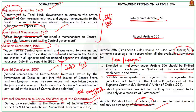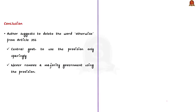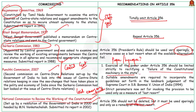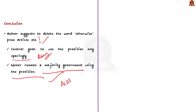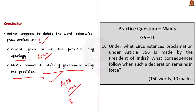Therefore, Article 356 is a deadly weapon that should be used only as a last resort to protect the Constitution. Aspirants should have a brief idea on all these committees; whenever discussing federalism in mains answers, reference any one of these commissions, as they have all addressed federal provisions of India in depth. In conclusion, the author calls for deletion of the word 'otherwise' and urges the central government to use the provision sparingly and never to remove a majority government using it. This concludes the comprehensive discussion of Article 356 — its issues, what the Supreme Court said, and the way forward.